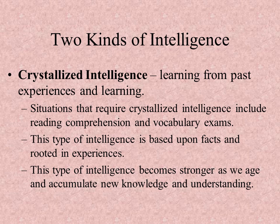There are two main types of intelligence. Crystallized intelligence — think of a crystal, think of a hard rock — this is your hard intelligence: facts that you have memorized, things you have memorized. It's your knowledge base. This type of intelligence becomes stronger as we age and learn more things. Crystallized intelligence is those hard facts that you know and things you've experienced.